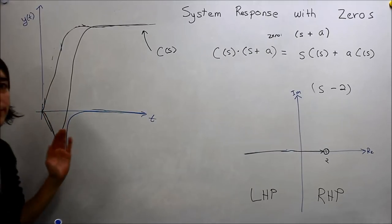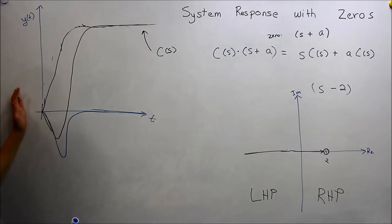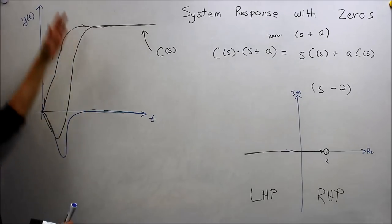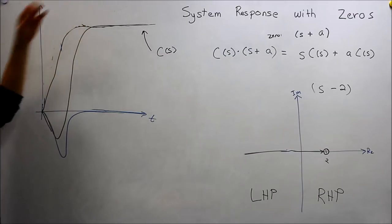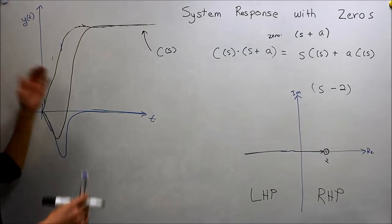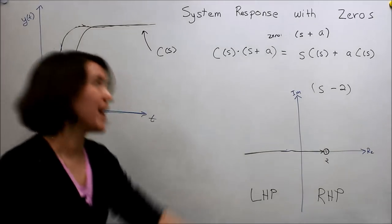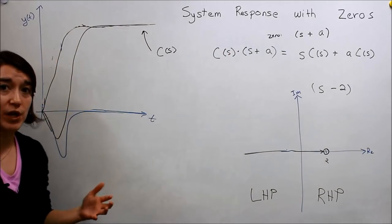A dip in our system before we then rise back up to our normal operation. So what a right half plane zero can do is actually make our, when we do a startup condition, we actually have to decrease a little bit before we can increase back up. And so that's kind of like, if you want to go up, you actually have to go down first and then go back up.